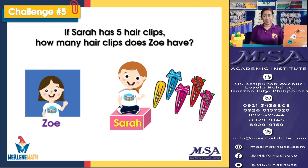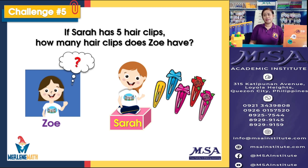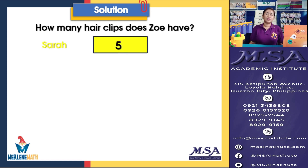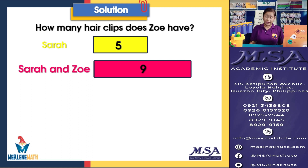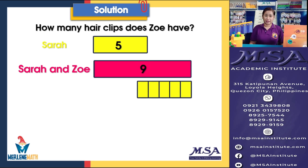Here is Zoe and that is Sarah, who has five hair clips. That's correct. We have five hair clips for Sarah. Now, we need to know how many hair clips does Zoe have. We know that Sarah has five hair clips. When we add Sarah and Zoe's hair clips, we have nine. Therefore, five out of these nine hair clips belong to Sarah, and the remaining will belong to Zoe.